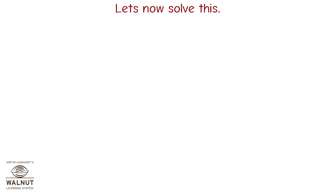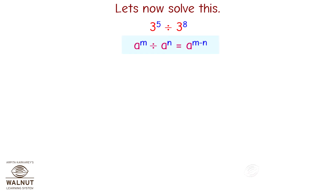Let's now solve 3 raised to 5 divided by 3 raised to 8. First, using the law of exponents, 3 raised to 5 divided by 3 raised to 8 is equal to 3 raised to 5 minus 8, which is equal to 3 raised to minus 3.